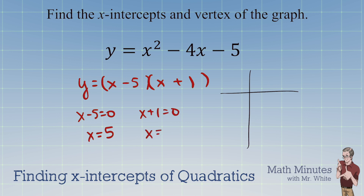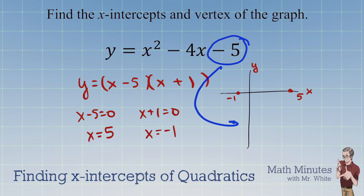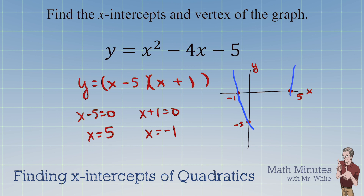Setting each factor to 0, we get x equals 5 and x equals negative 1 as the x-intercepts. We put a dot at negative 1 and at 5 on the graph. The y-intercept is negative 5, so we go down to negative 5 on the y-axis. We can start to visualize this — it's a parabola opening up because the a value is positive.